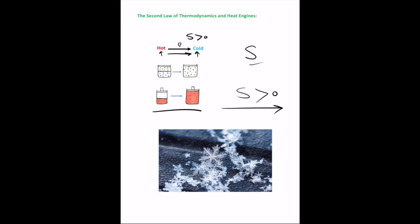When the system is not isolated, we must consider the entropy change of the system and its environment. For example, when water freezes and forms a snowflake — a highly ordered state — it releases energy into the environment that creates disorder elsewhere. This disorder represents an increase in entropy larger than the decrease in entropy of the snowflake itself, so the total entropy of the system and its environment increases during freezing.